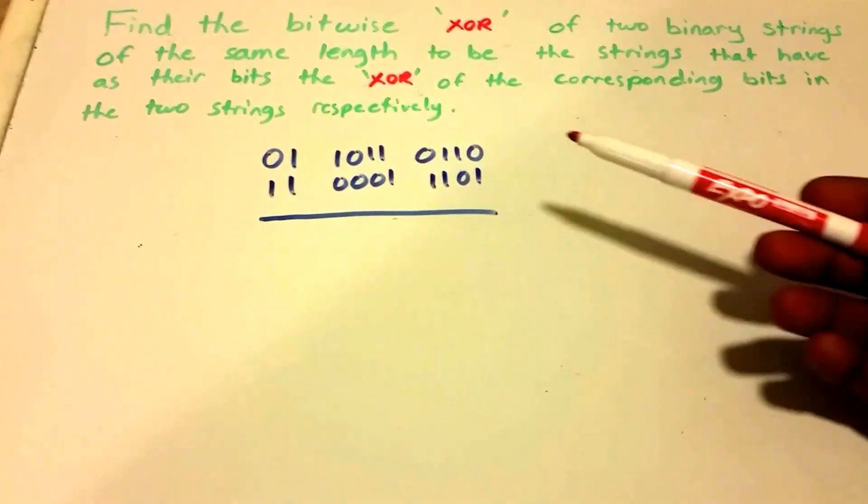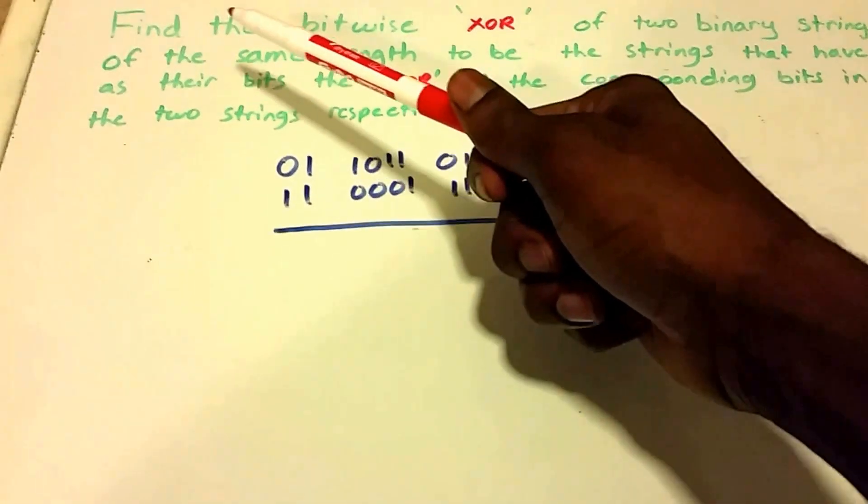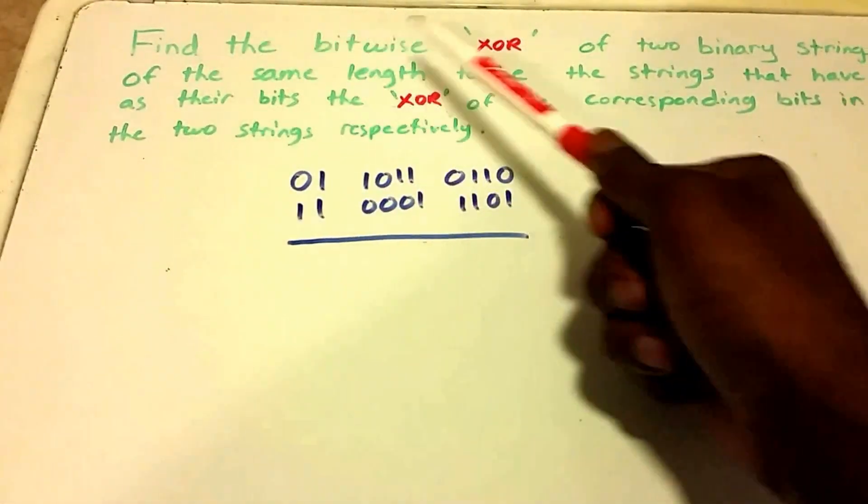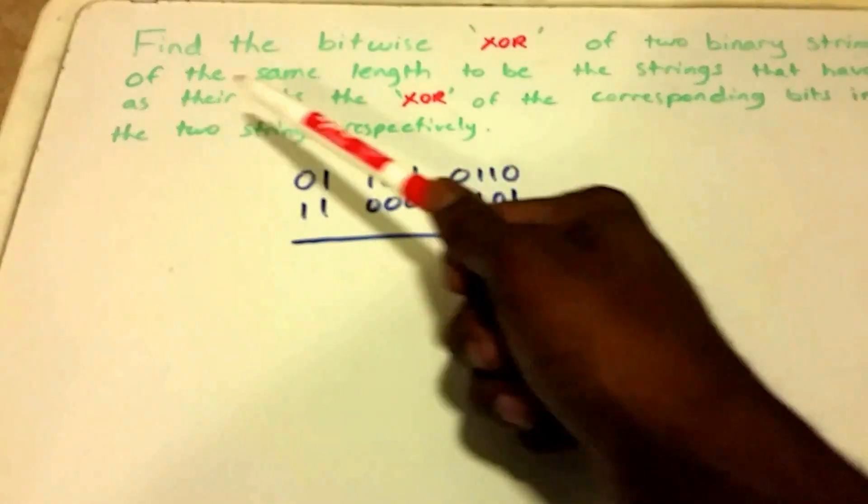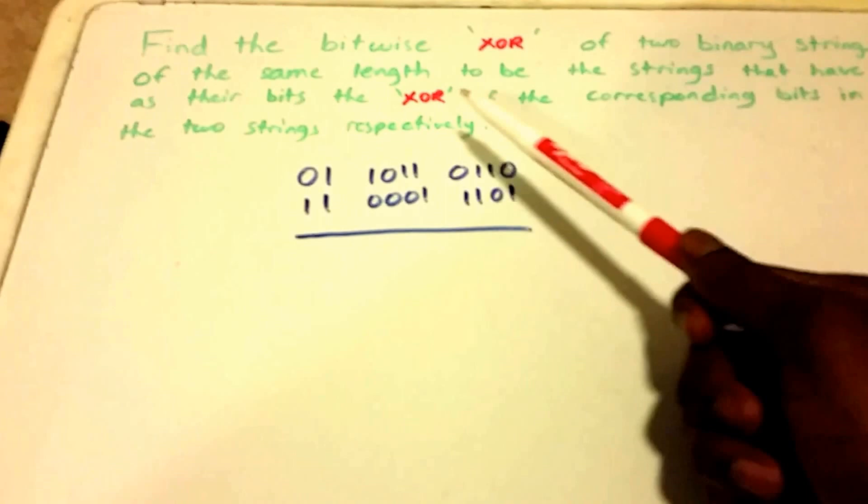Hey guys, this is a video on the exclusive OR bitwise operation. So here we have the question that says: find the bitwise exclusive OR of two binary strings of the same length to be the strings that have as their bits the exclusive OR of the corresponding bits in the two strings respectively.